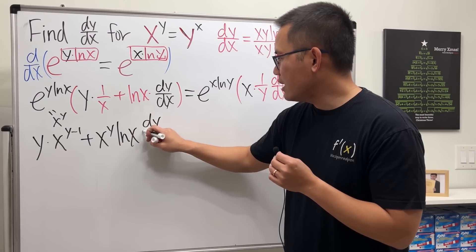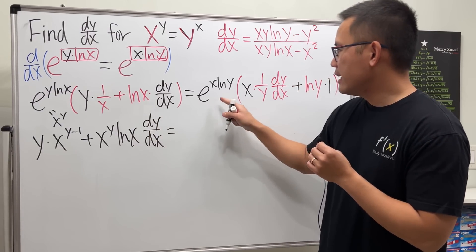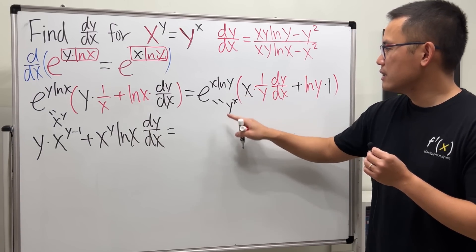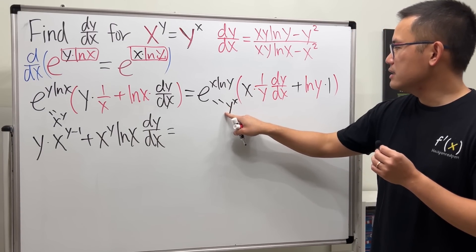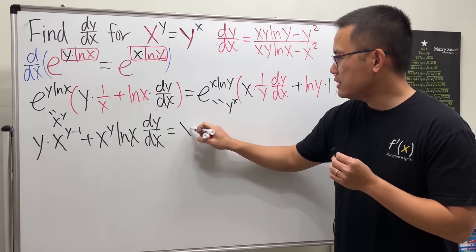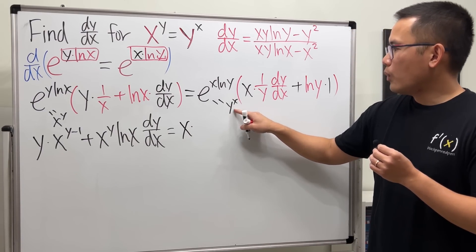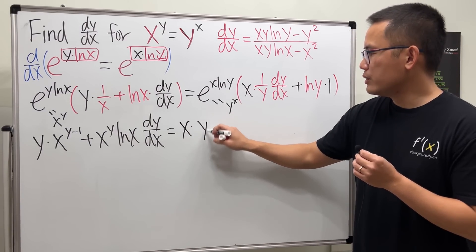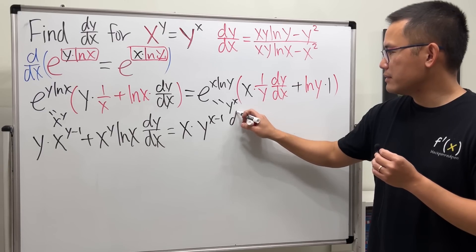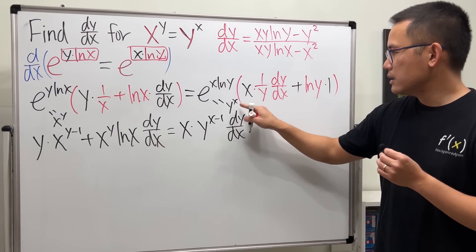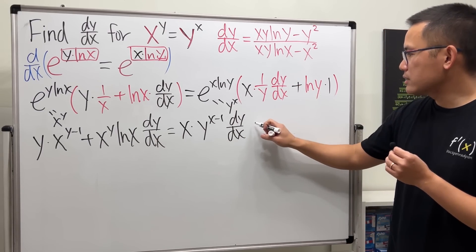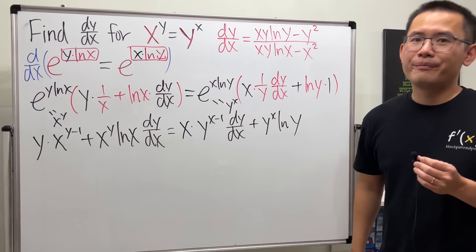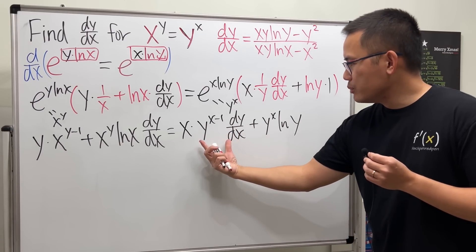Next, we have x to the y times ln x times dy/dx. On the right hand side, similarly, it is y to the x — take this and multiply: put down x first, y to the x over y is y to the x minus 1, and we still have the dy/dx. Then taking x times y to the x gives us plus y to the x ln y.